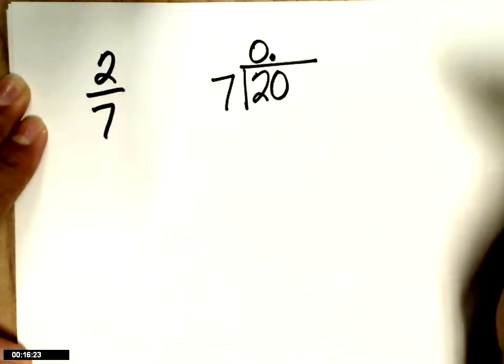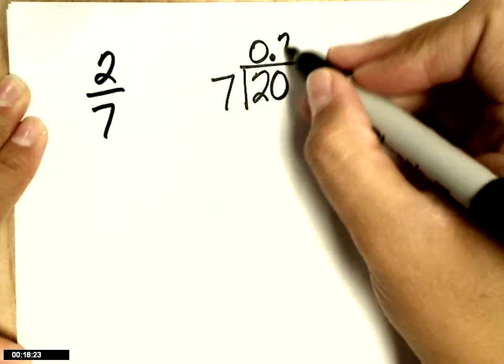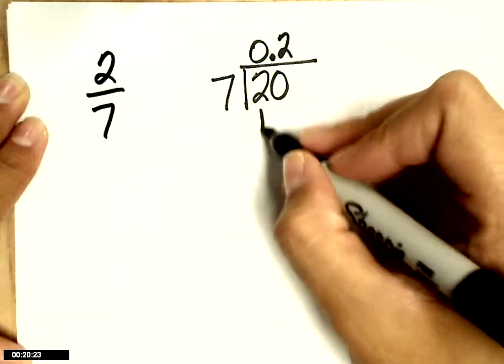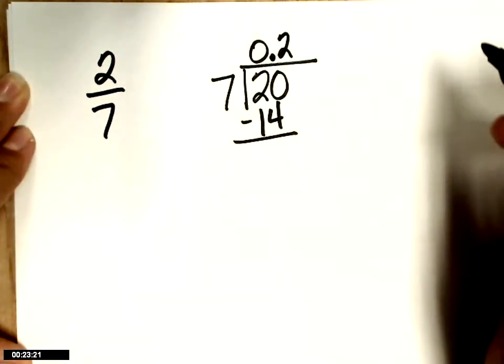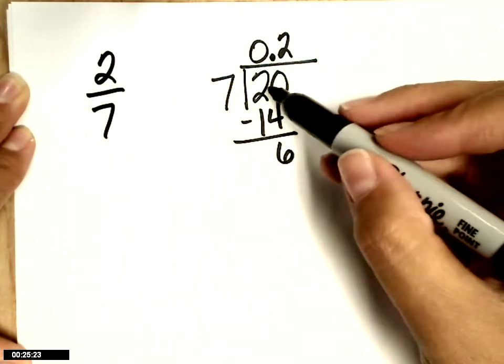7 into 20? Twice, because 3 would be 21 and that's too many. 20 minus 14? Add a 0,